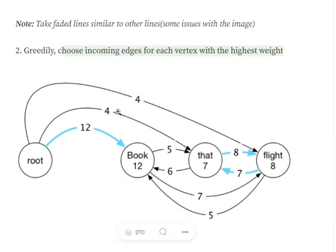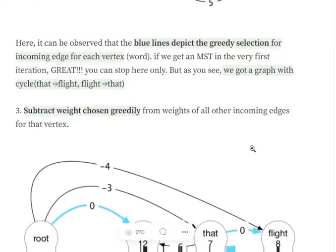Now the next step: since the Chu-Liu/Edmonds algorithm is based on a greedy approach, for each word in the sentence that has an incoming edge, we choose the maximum weight edge. For example, for 'book' we have three incoming edges with weights 12, 6, and 5 — 12 is the highest, so it is highlighted in blue. Similarly, for 'that' and 'flight', we highlight the highest weighted incoming edge.